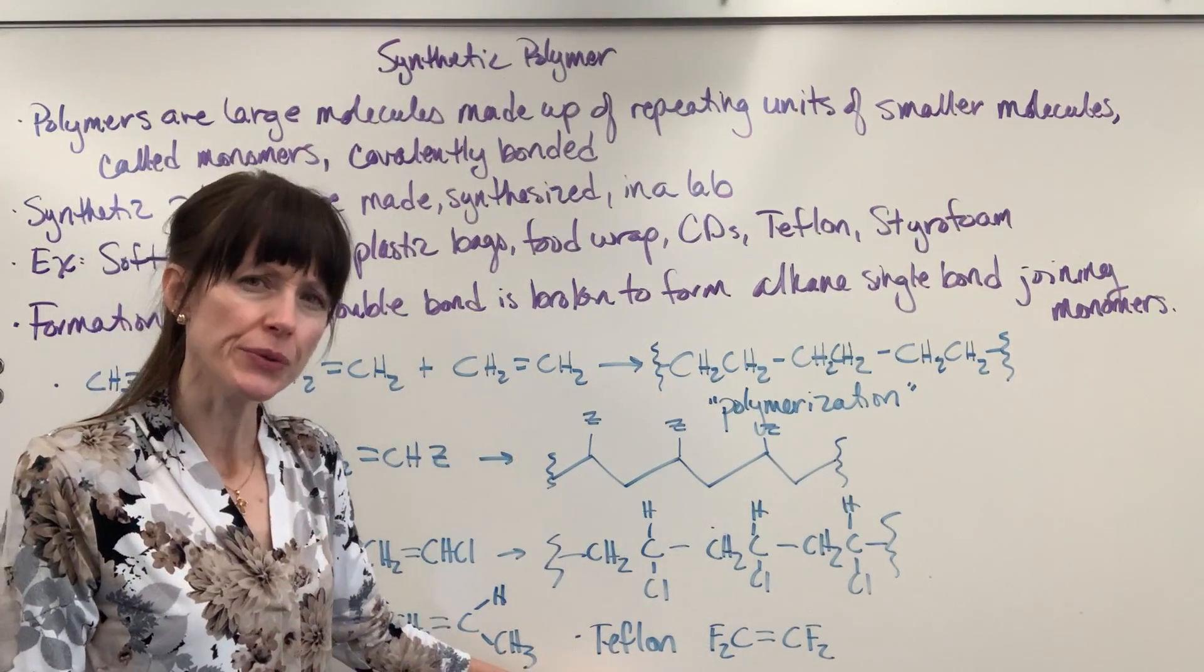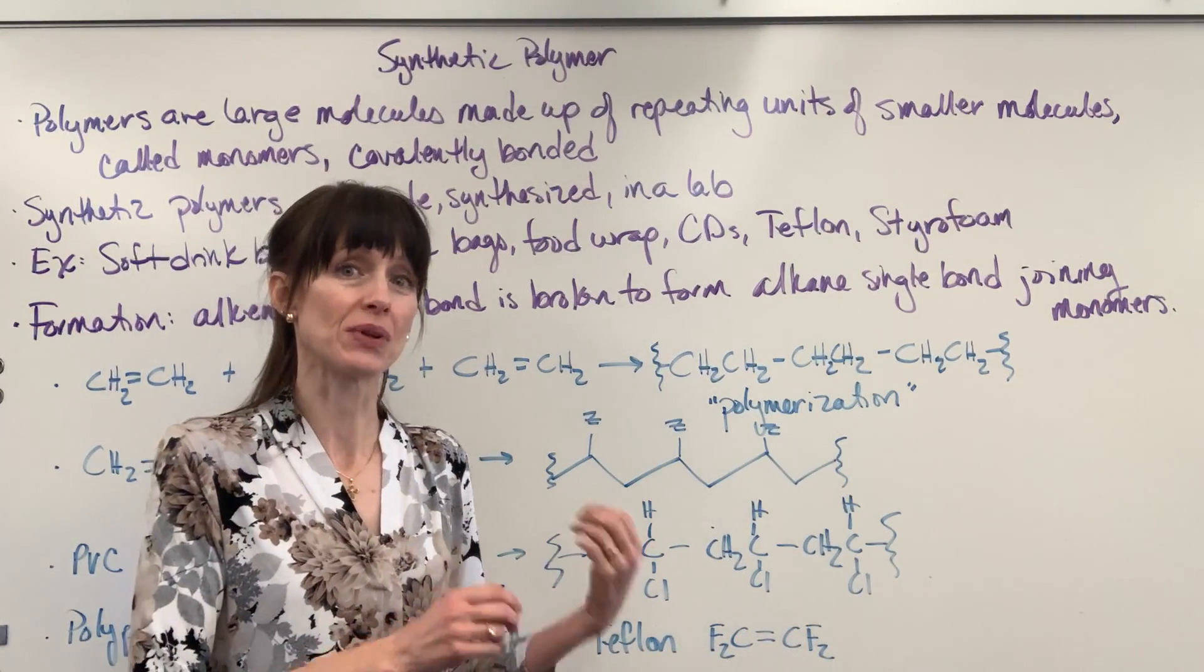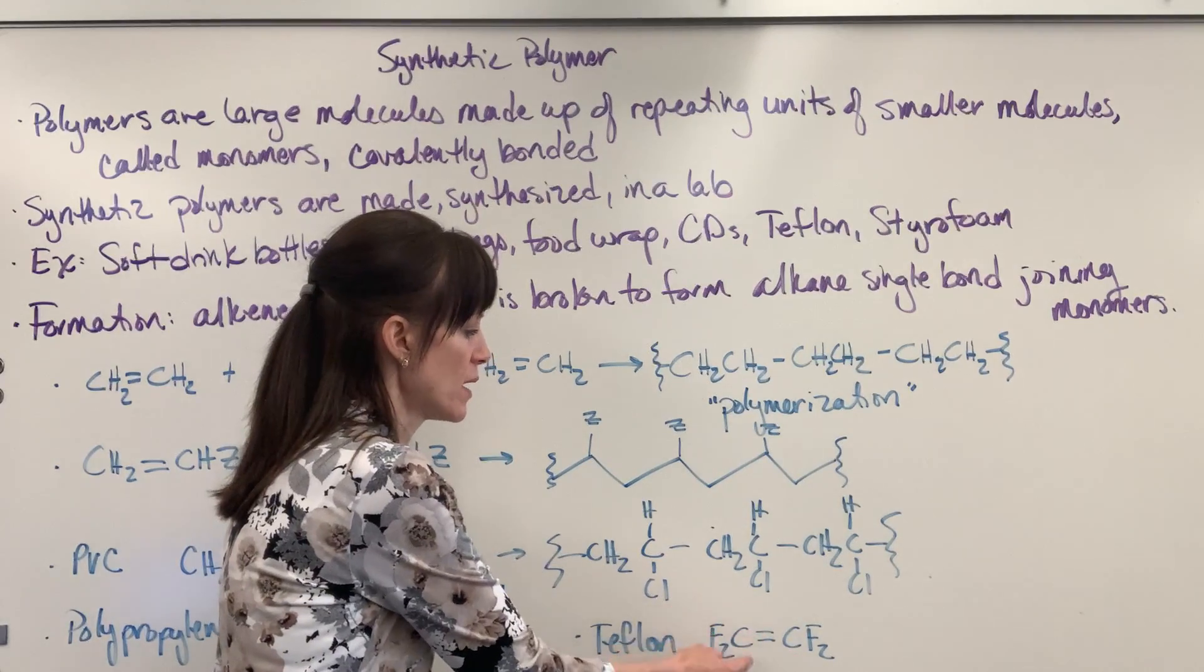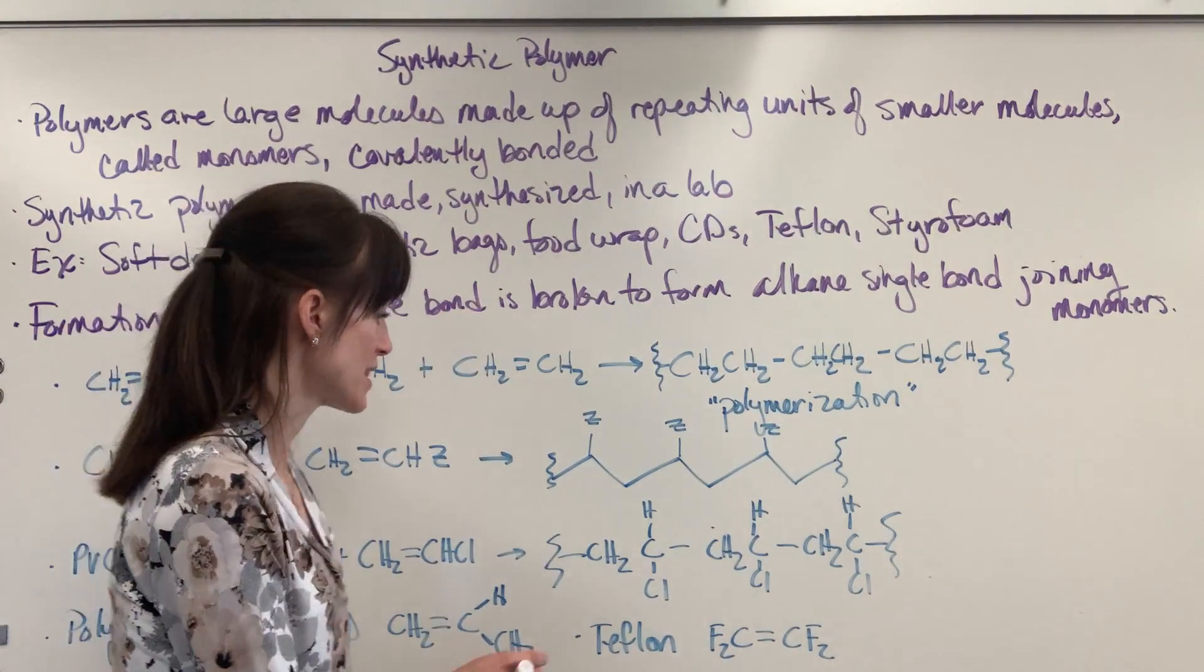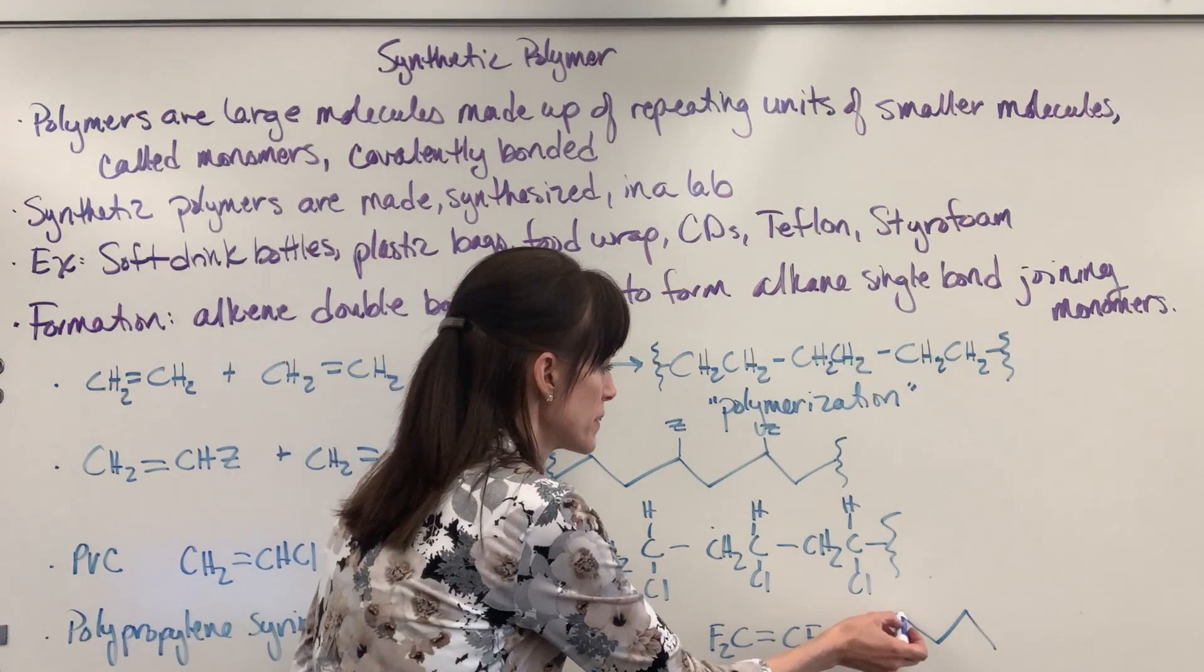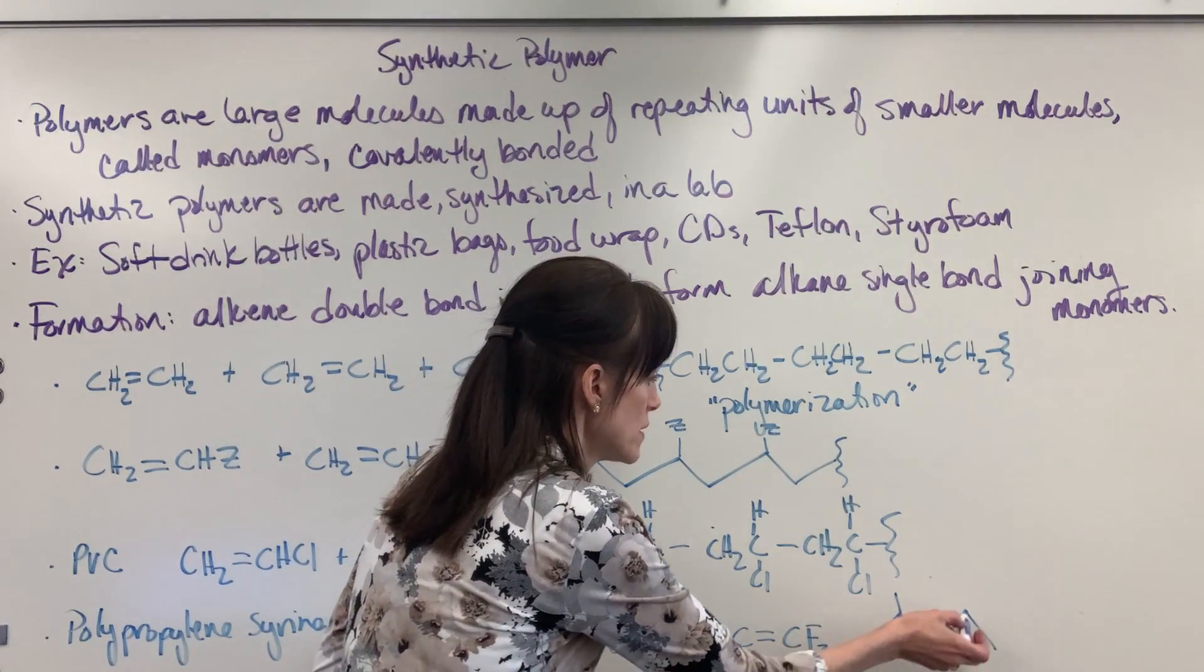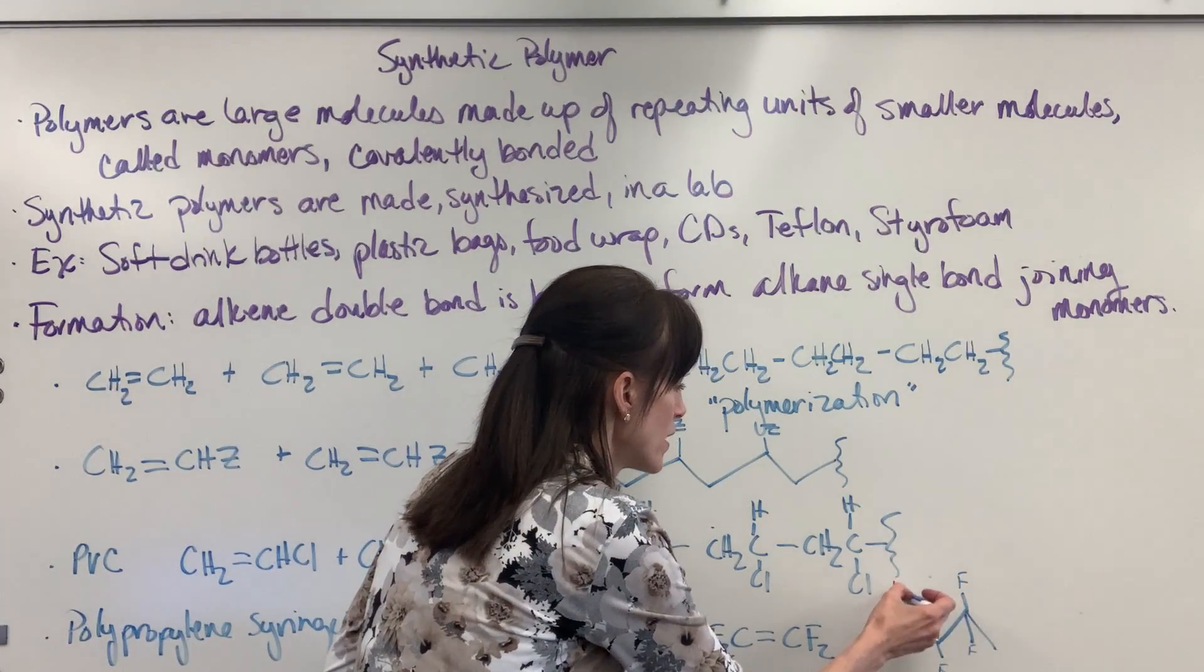Teflon, unique. It has no hydrogens and fluorines in place of the hydrogens. So you have your carbon, double bonded carbon with two fluorines on each of those. So if I were to draw this, you're going to have those fluorines on every carbon. So you're going to have the two fluorines, the two fluorines, the two fluorines, and that's going to be on every single carbon. And that's your Teflon.